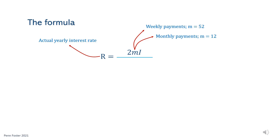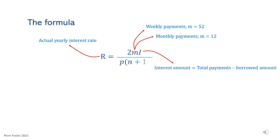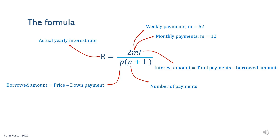I is the interest in dollars paid on top of the owed price of the purchase. I equals the total payments to be made over the course of the agreement minus the remaining borrowed price of the purchase. On the denominator goes P times N plus 1. P represents the amount of borrowed money after paying the down payment. N is the actual number of planned out payments. Note that 2 and 1 are part of the formula and do not change.